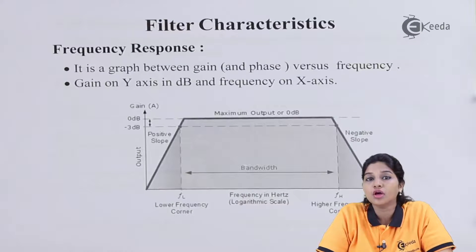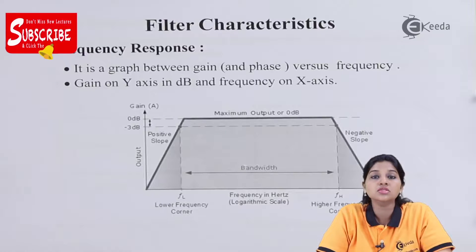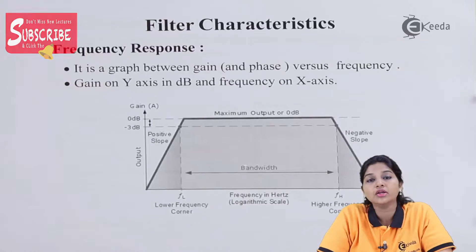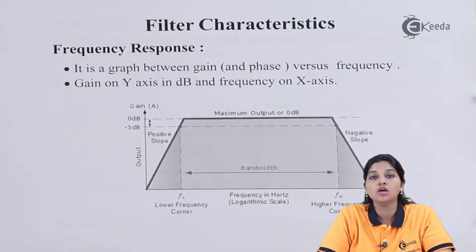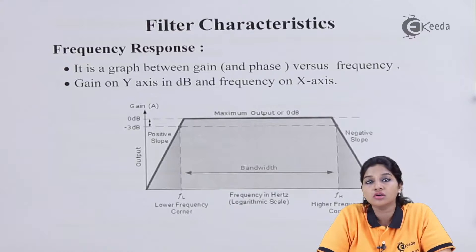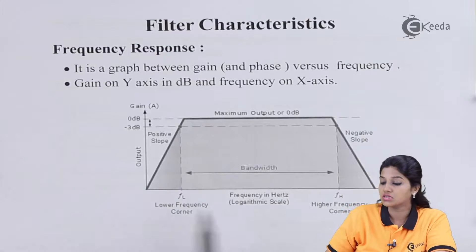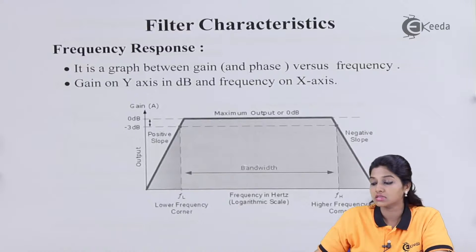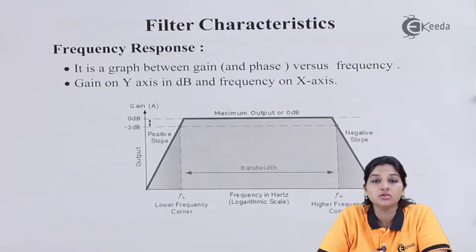For frequency, we are going to use a logarithmic scale because in the case of filters, we are dealing with a large range of frequencies. So in order to accommodate a large amount of frequency in a small space, we consider a logarithmic scale. Frequencies in filters are always expressed in logarithmic scale on the x-axis, while gain is plotted on the y-axis in terms of dB.